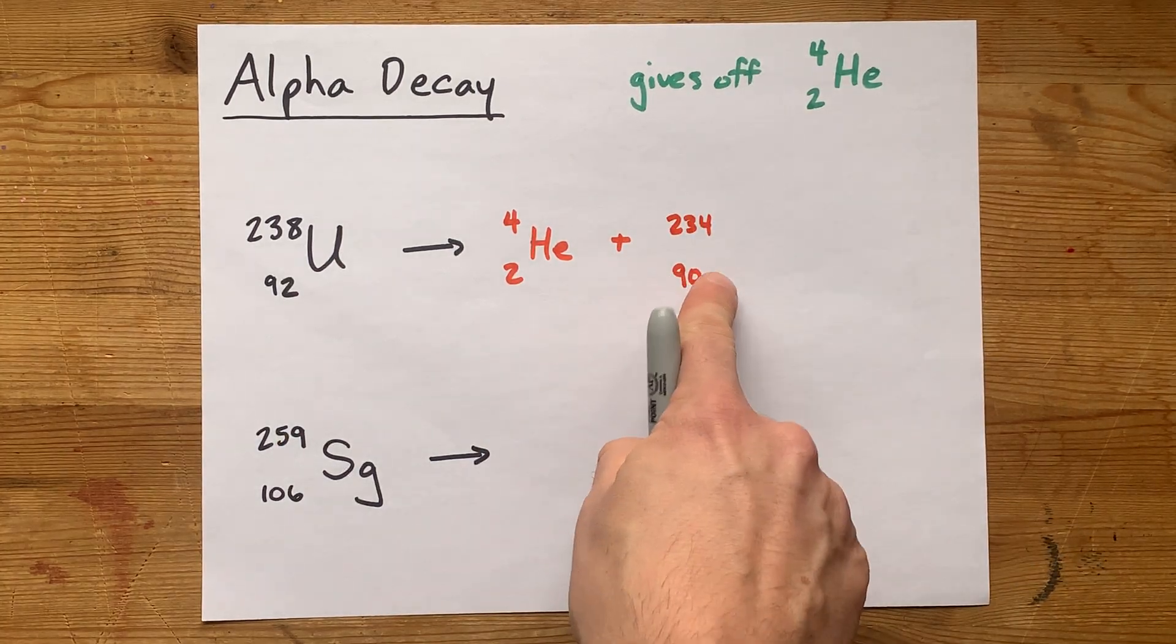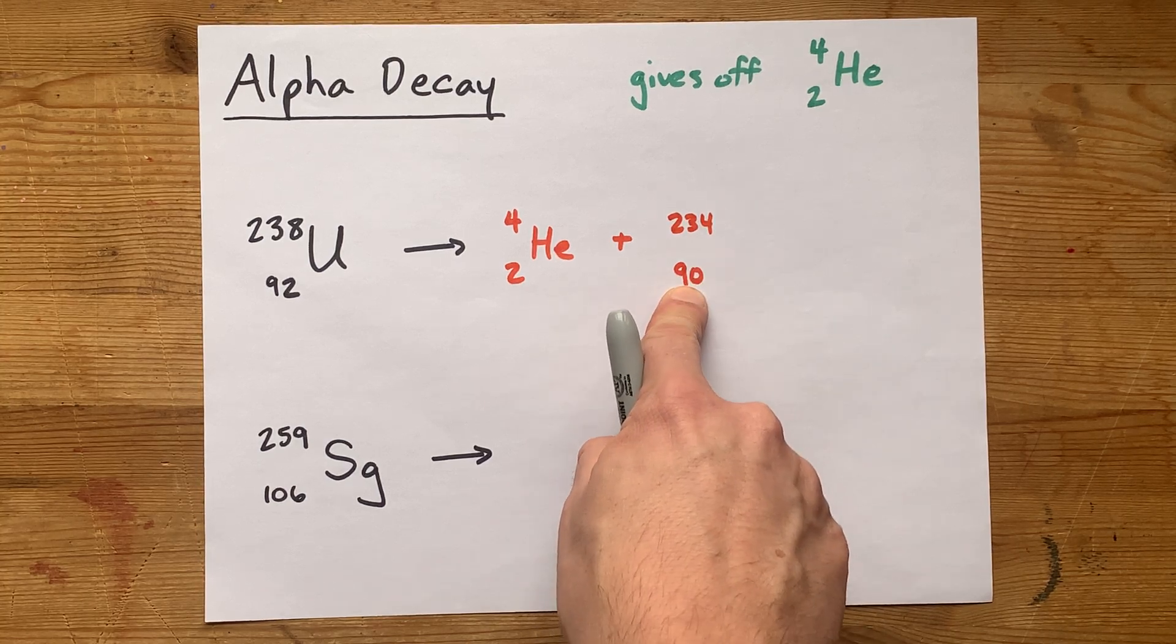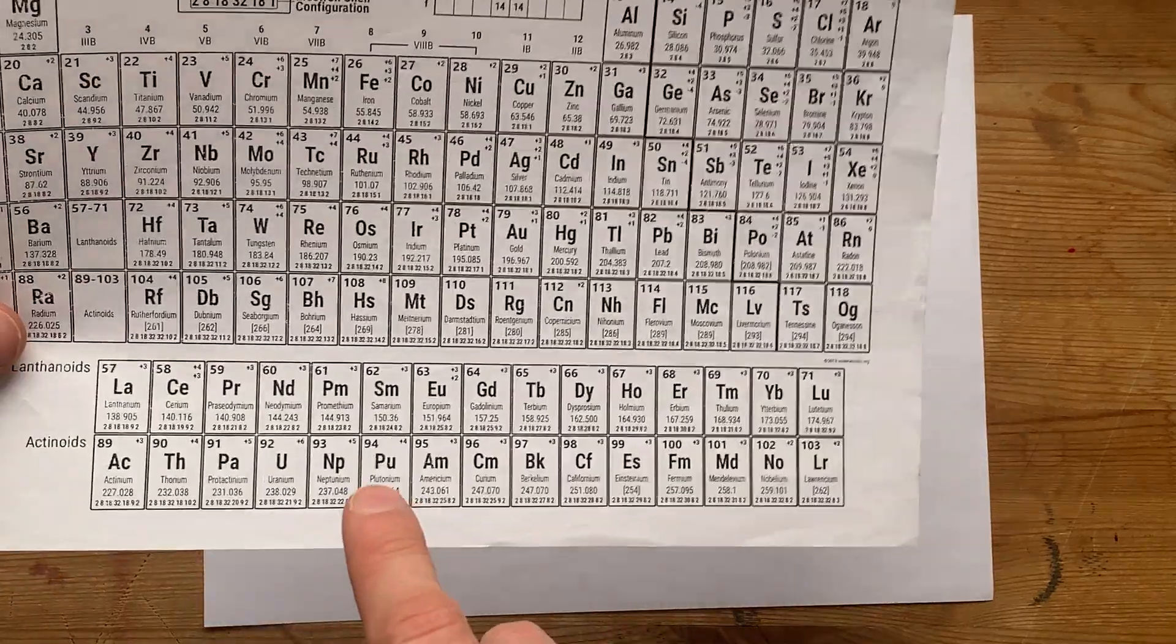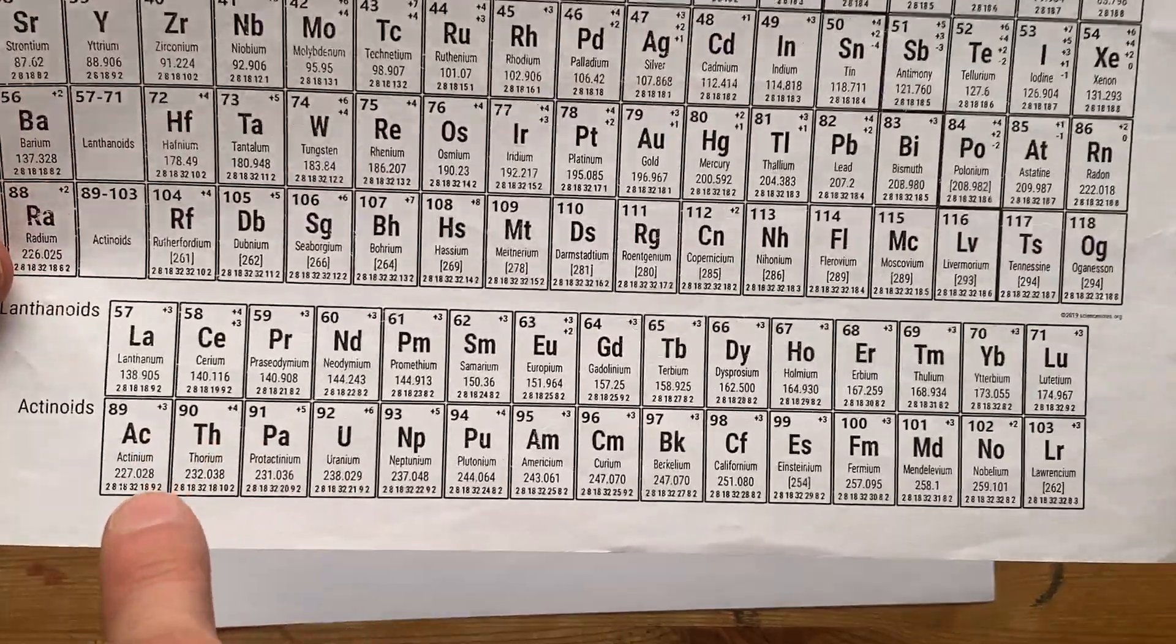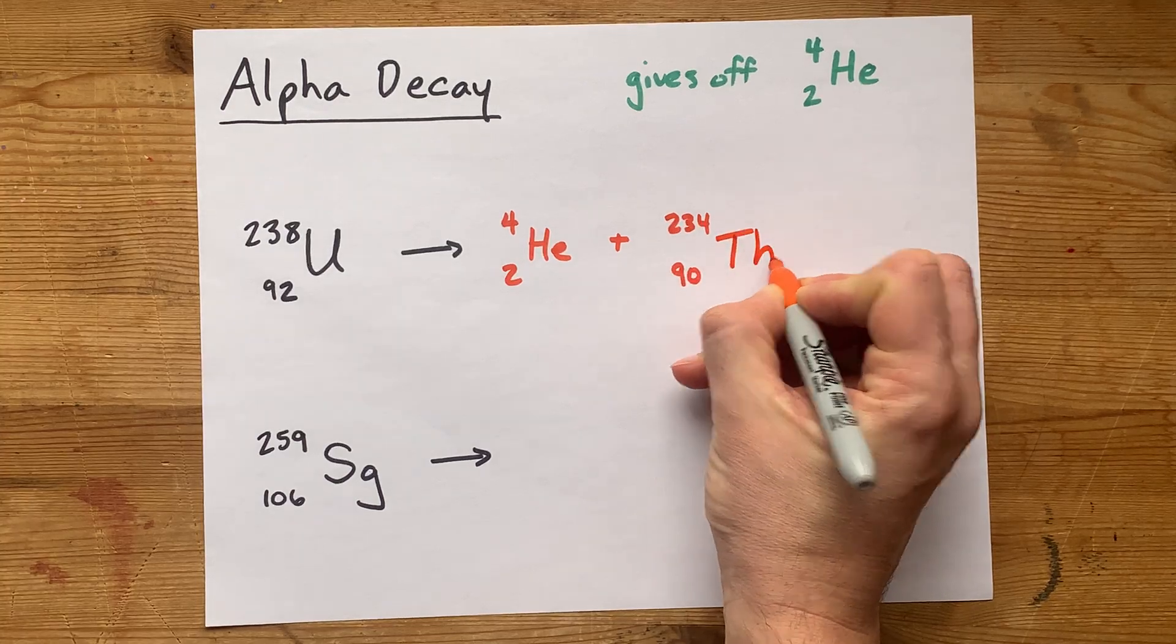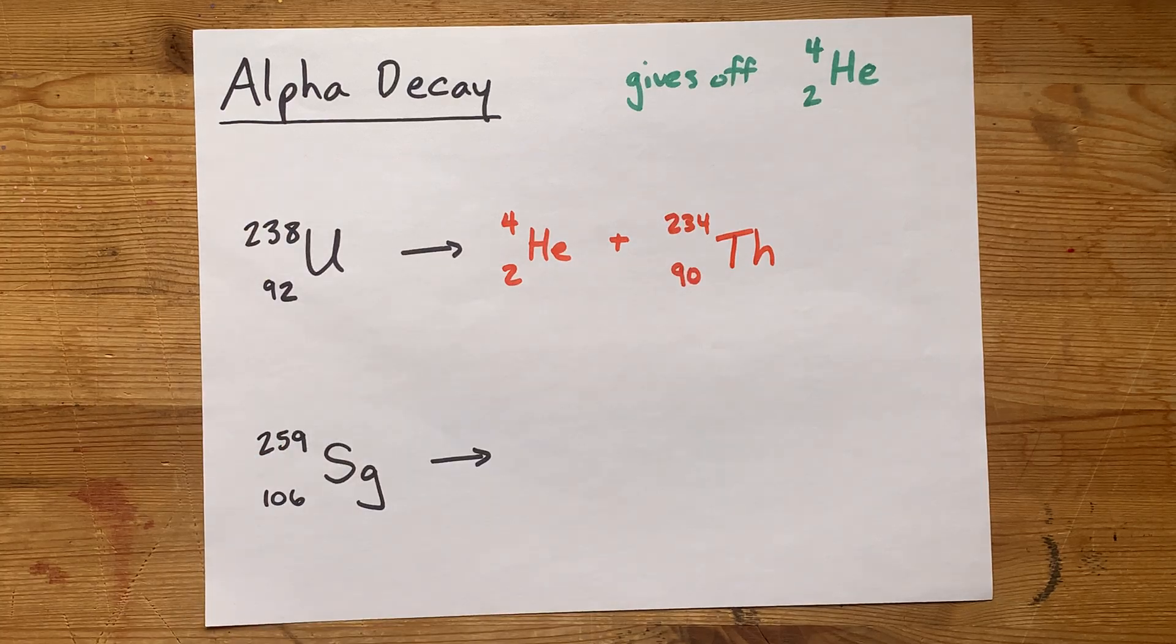Now, you're going to have to figure out what the atomic symbol is here that corresponds to this number. Just like 2 is the atomic number for helium, and 92 is the atomic number for uranium, 90 is the atomic number for thorium, TH. So this is the other particle that's created when there's alpha decay from uranium-238.